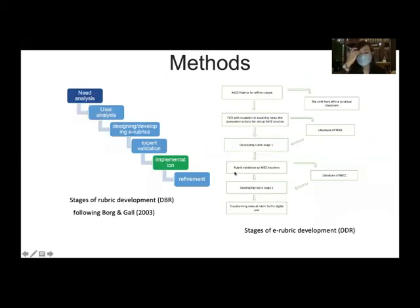The stages practically for the rubric development following Borg and Gall comprises six different phases that we adapted. We did several stages of rubric development.